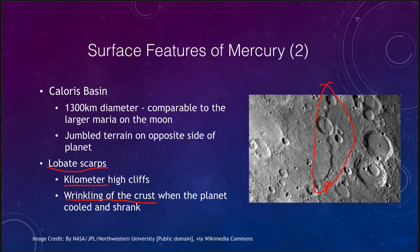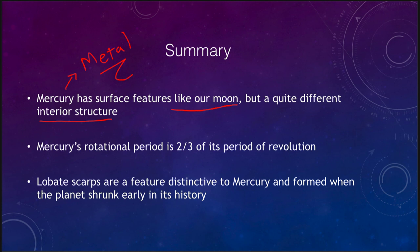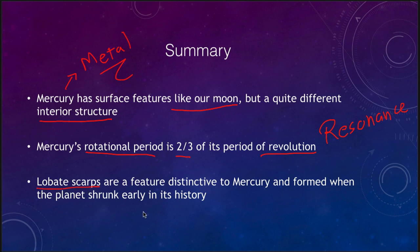Mercury has been explored by just those two spacecraft, though the MESSENGER craft, spending a long time in orbit, was able to give us a complete map before it finally ran out of fuel and crashed into the surface — giving Mercury one more crater. To summarize: Mercury has surface features much like our own Moon, but a very different interior structure with a lot of metal. About 70% of its diameter is the core — solid metal. Its rotational period is two thirds of its period of revolution, a resonance with its orbit and spin. And we looked at the lobate scarps, a feature distinctive to Mercury, probably formed when the planet shrank early in its history.